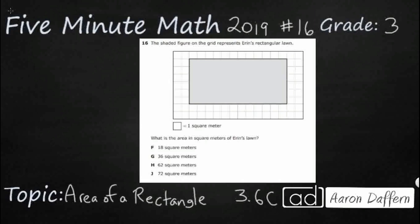Hello and welcome to Five Minute Math. Today we are looking at the third grade concept of finding the area of a rectangle. This is standard 3.6c in the great state of Texas and we are using item number 16 off the 2019 released STAR test. If you have not done so already, please go ahead and take a moment to pause the video, work this problem out on your own, unpause it, and then we will look at our answers together.